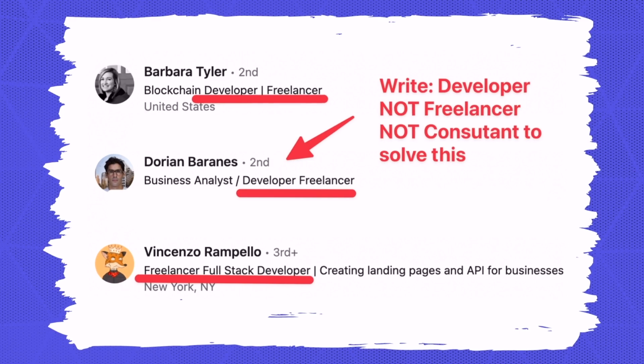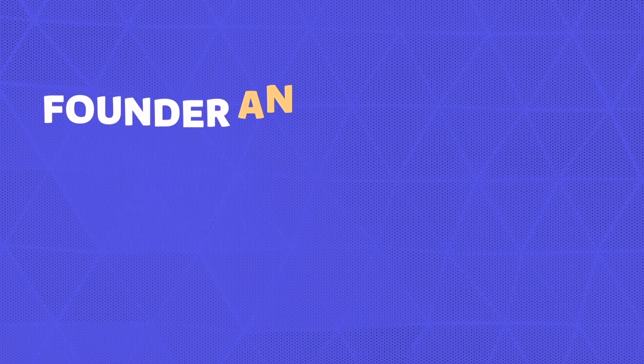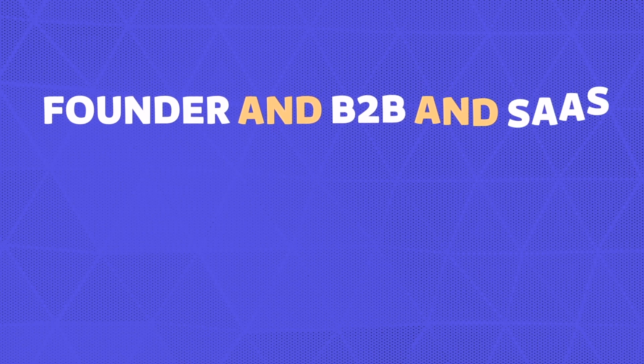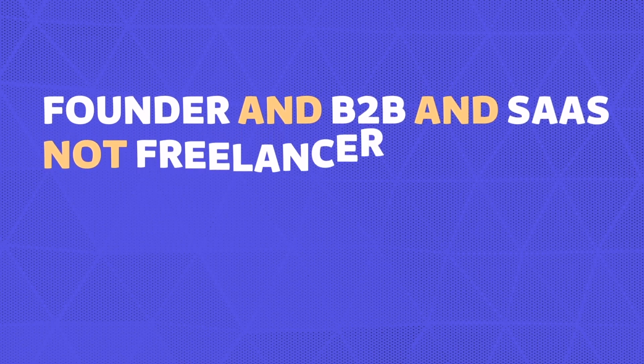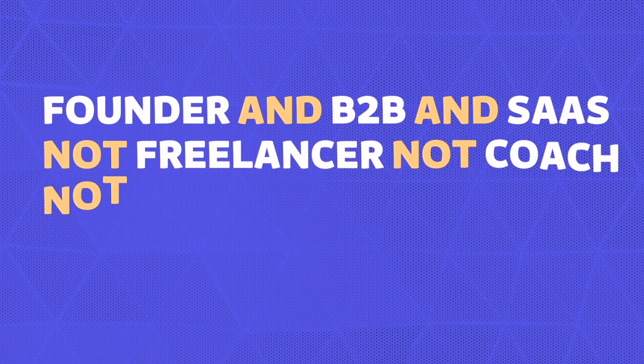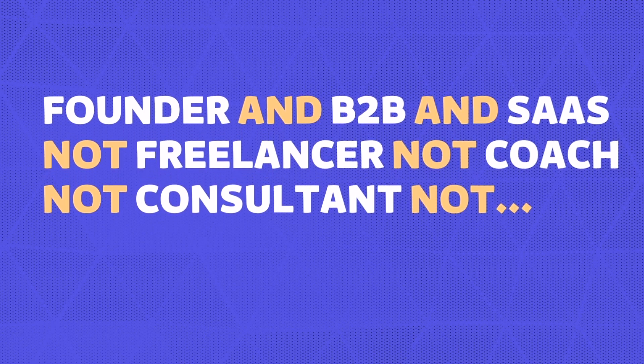If you have a blacklist of keywords, just add them at the end of your boolean search writing 'NOT A, NOT B, NOT C, NOT D'. You can easily exclude any keywords from your search results this way.